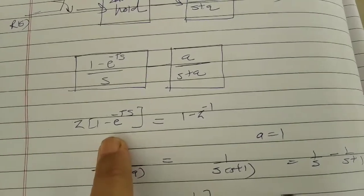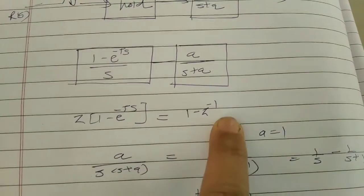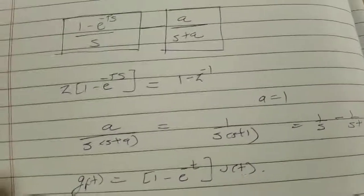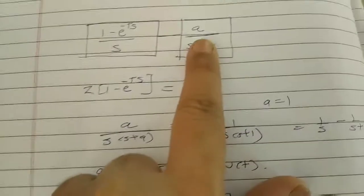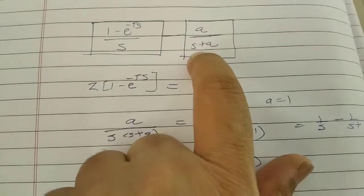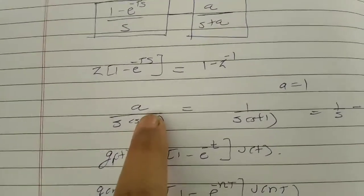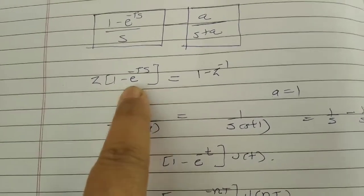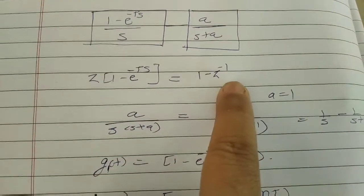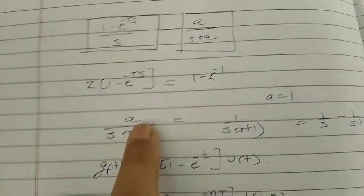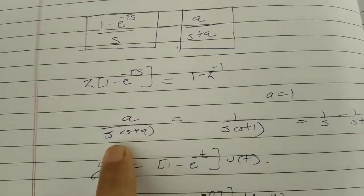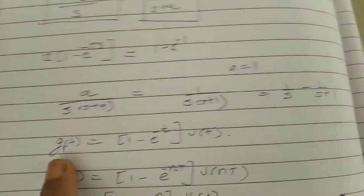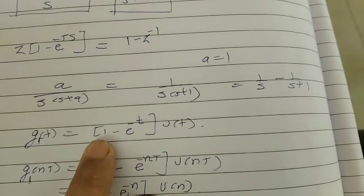The Z-transform of (1 minus e raised to minus Ts) is (1 minus Z raised to minus 1). To find the Z-transform of this function, we take the s term separately. With a equal to 1, we have 1 divided by s(s+1), which by partial fractions is (1/s) minus (1/(s+1)).